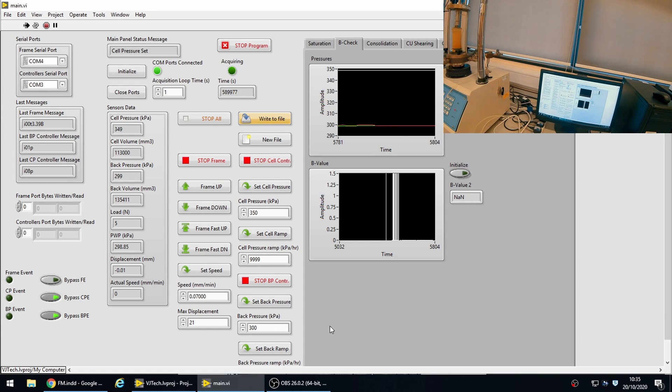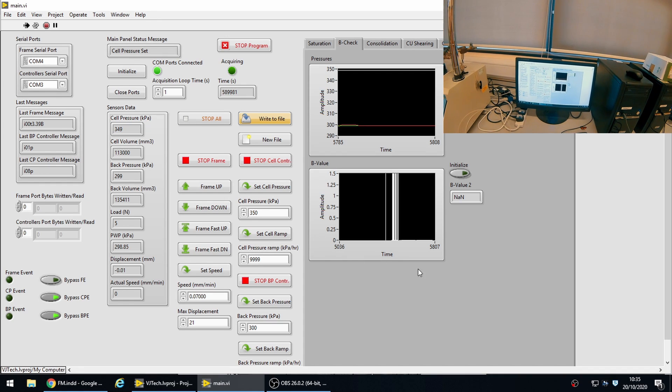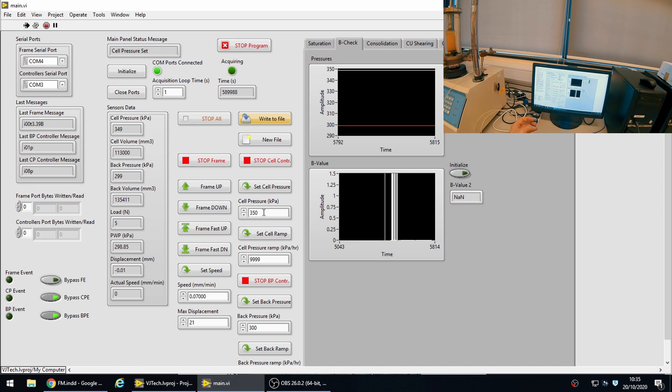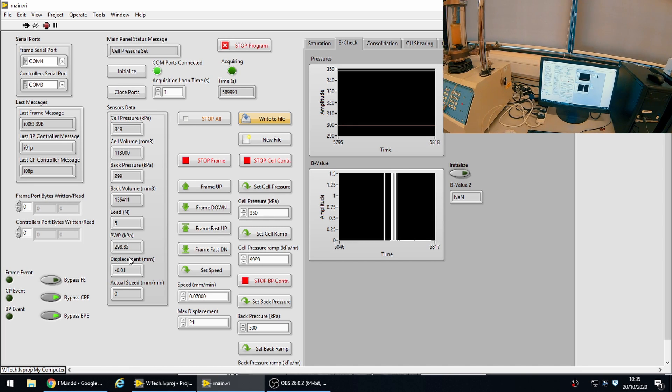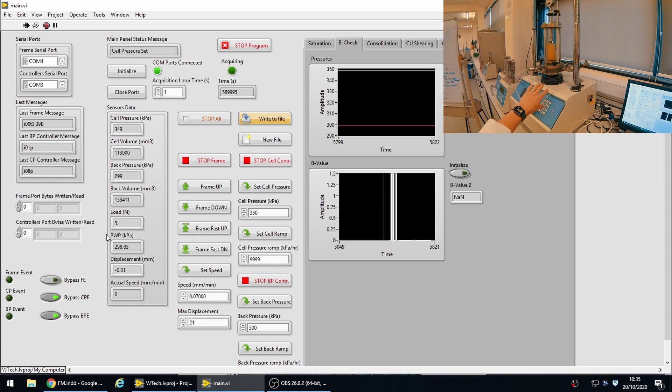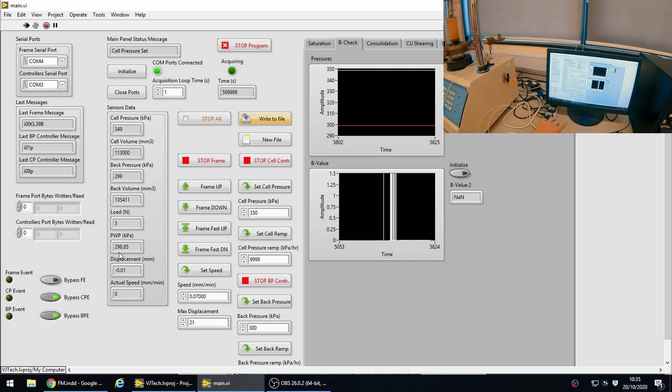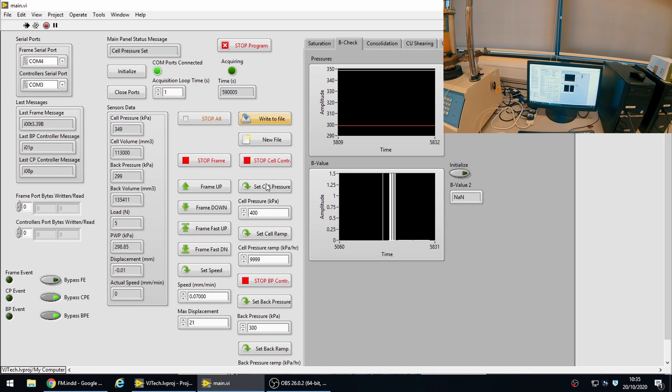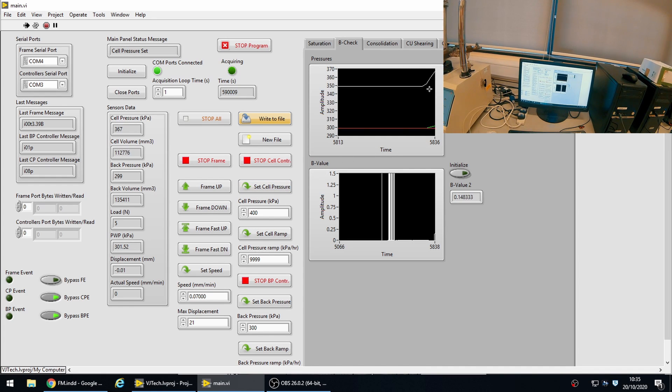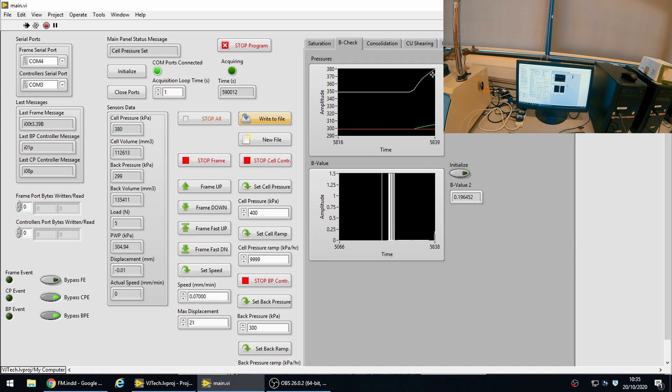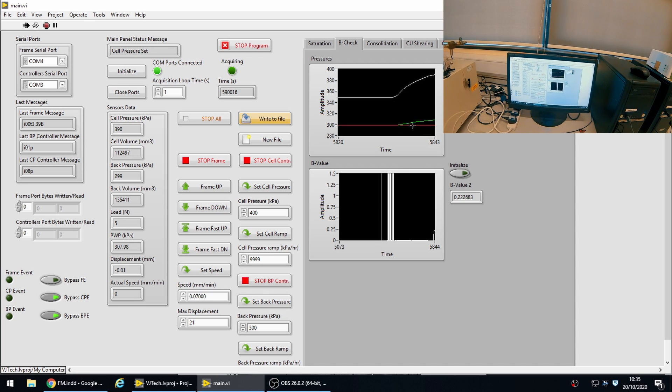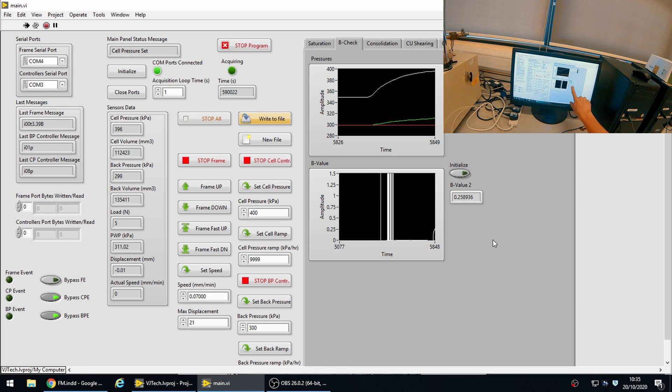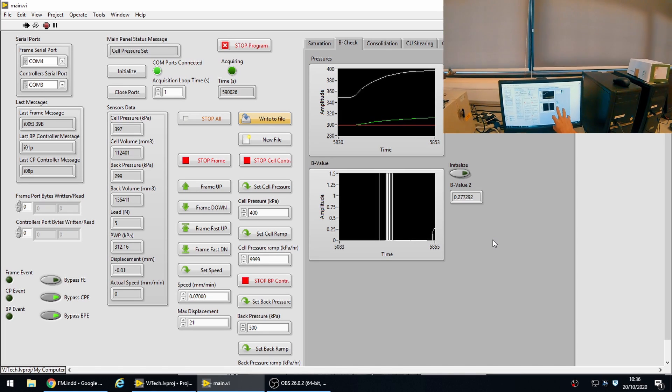I'm going to open up the controller window. We see our fields here—the one we'll be looking at will be this B value chart. I've just initialized this so that the application has recorded the initial cell pressure of 350, and you can see the pore water pressure within the sample now it's closed off to the back pressure controller is 289. So I'm going to set my cell pressure to 400 and set. Now my cell pressure is climbing up to 400, and you can see on the yellow line the pore pressures are changing too.